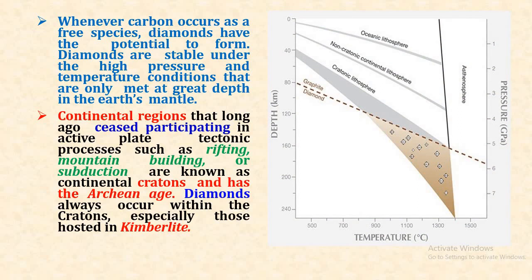This is a temperature-depth graph which shows that diamonds are formed at depths of more than 120 to 1,140 km — ranging from 140 km to 220 km depth — with temperatures of more than 1,000 degrees Celsius and pressures of more than 5 GPa. These are the physical conditions under which diamonds are formed in the mantle.